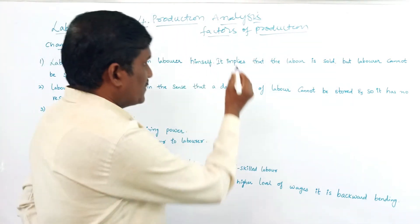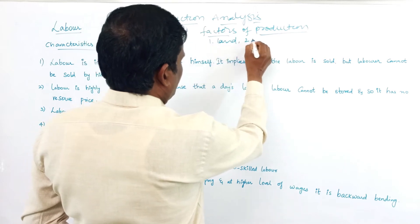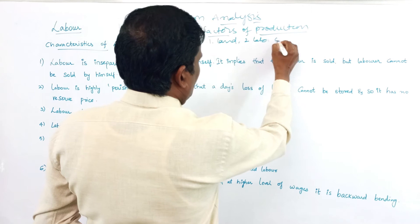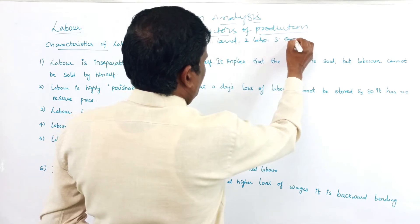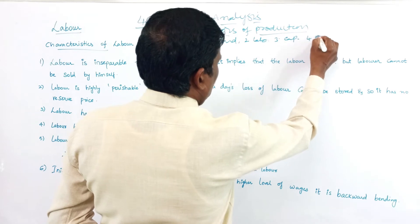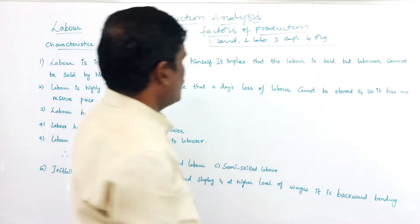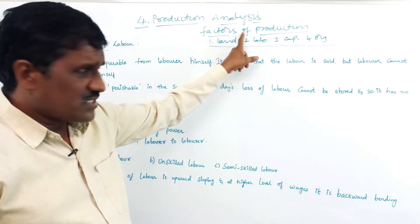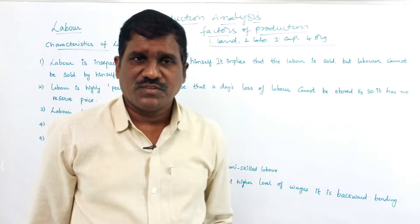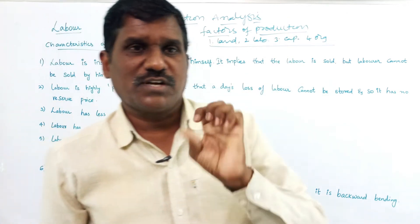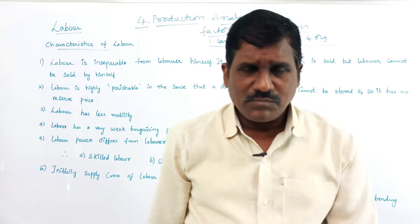The factors of production are: land, labor, capital, and organization. These four are called factors of production, and they are all helpful in the process of production.